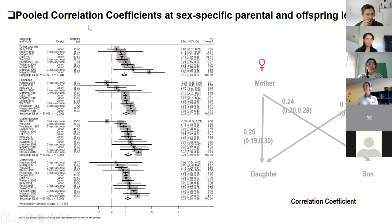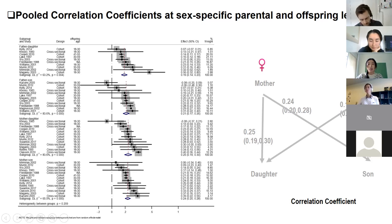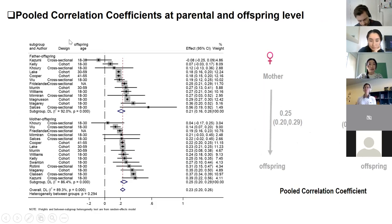Looking at correlation coefficients at the sex-specific level, the forest plot and summary figure show: the correlation between mother and daughter is 0.25, between mother and son is 0.24 — very close. The correlation between father and daughter is 0.19, and between father and son is 0.20. At the parent level, the correlation between mother and offspring is 0.25, and between father and offspring is 0.21.